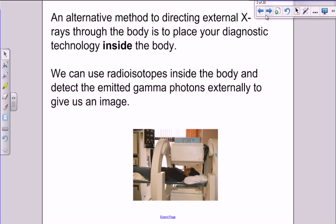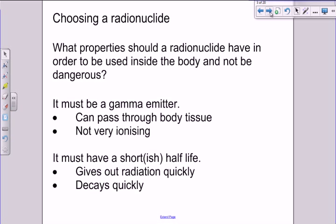So what sort of radioactive isotope do we want to use? Well, it has to be firstly a gamma emitter. It's got to be a gamma emitter because alpha and beta are not penetrating enough to escape the body. So if you placed an alpha emitter within the body, it would be dangerous because it's highly ionising and it's not very penetrating and so the radiation wouldn't escape from the body. And similar things can be said about beta. So we have to use a gamma emitter.